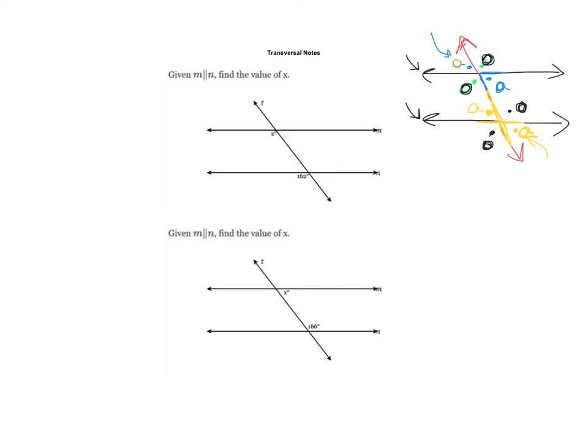The big thing is we have to decide: are we working with two acute angles? Two a's, they're equal. If we have an o and an o, those are also equal. If I have an a and an o, they form a linear pair and add up to 180, or I could subtract from 180 to find the other one.